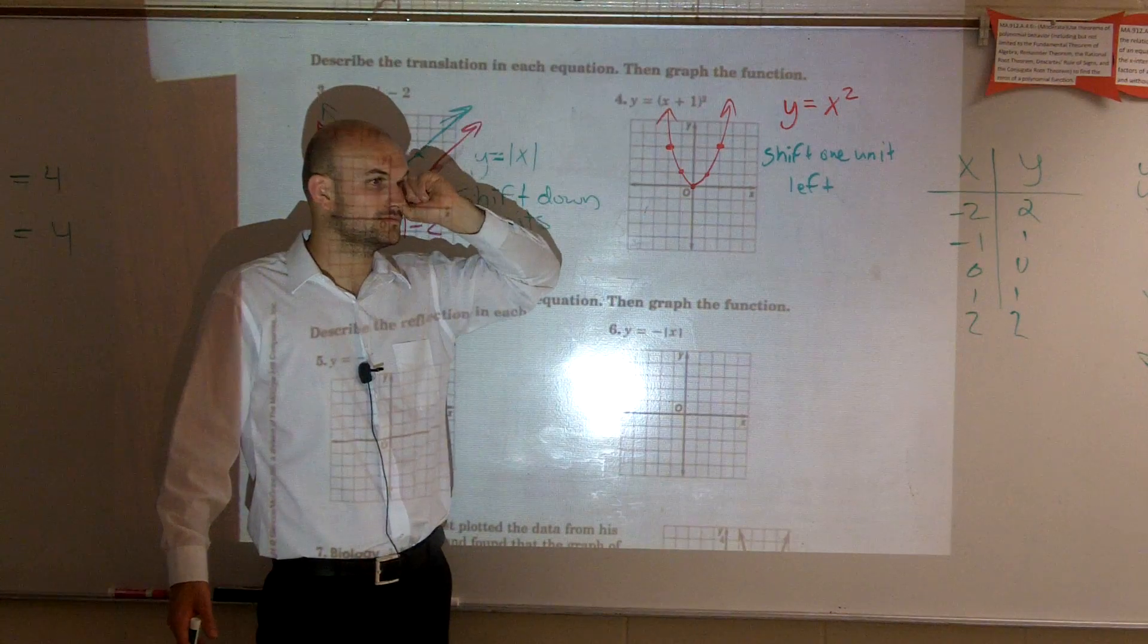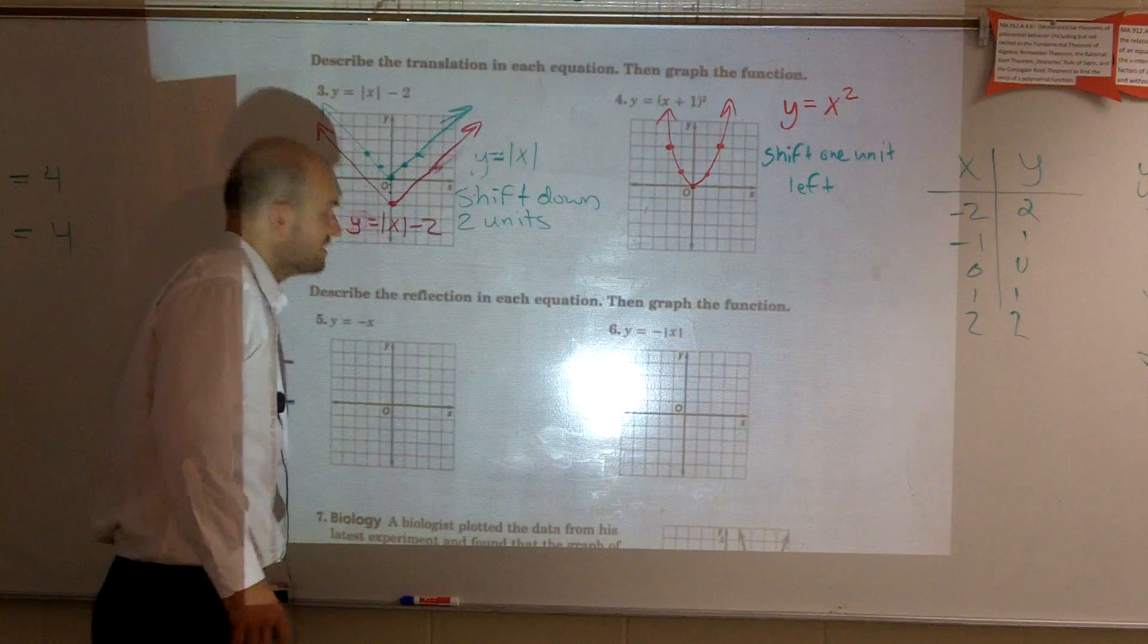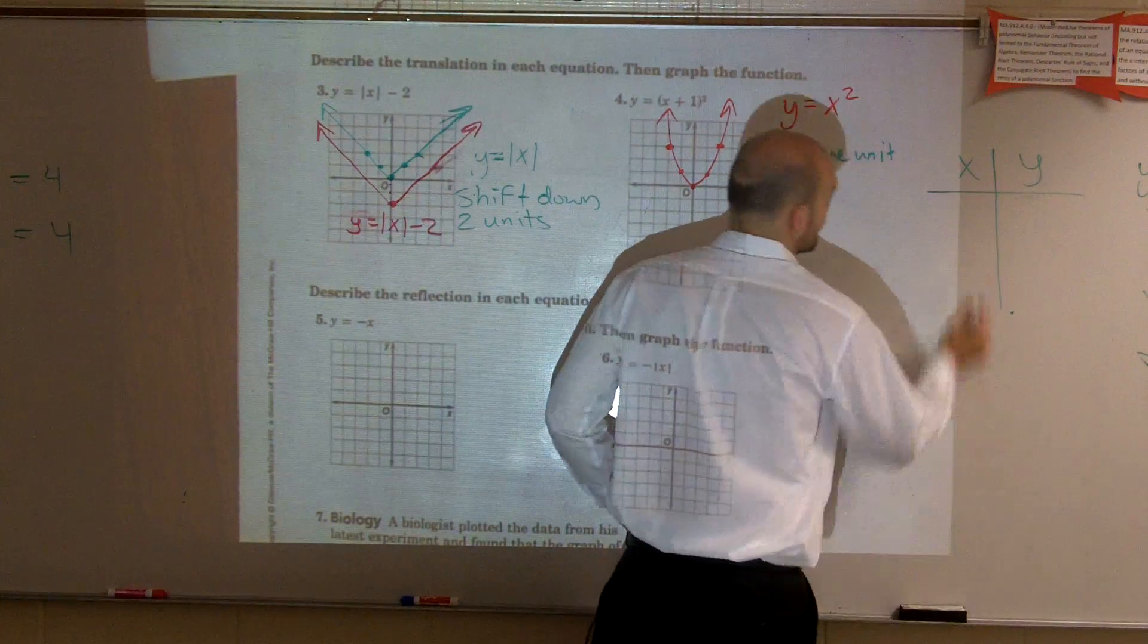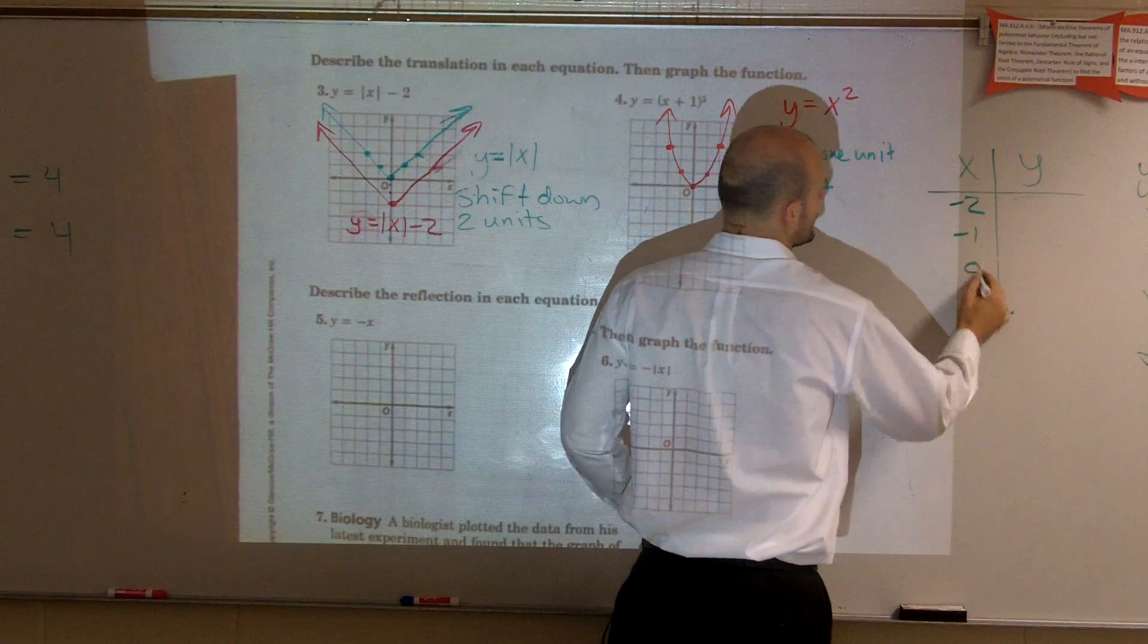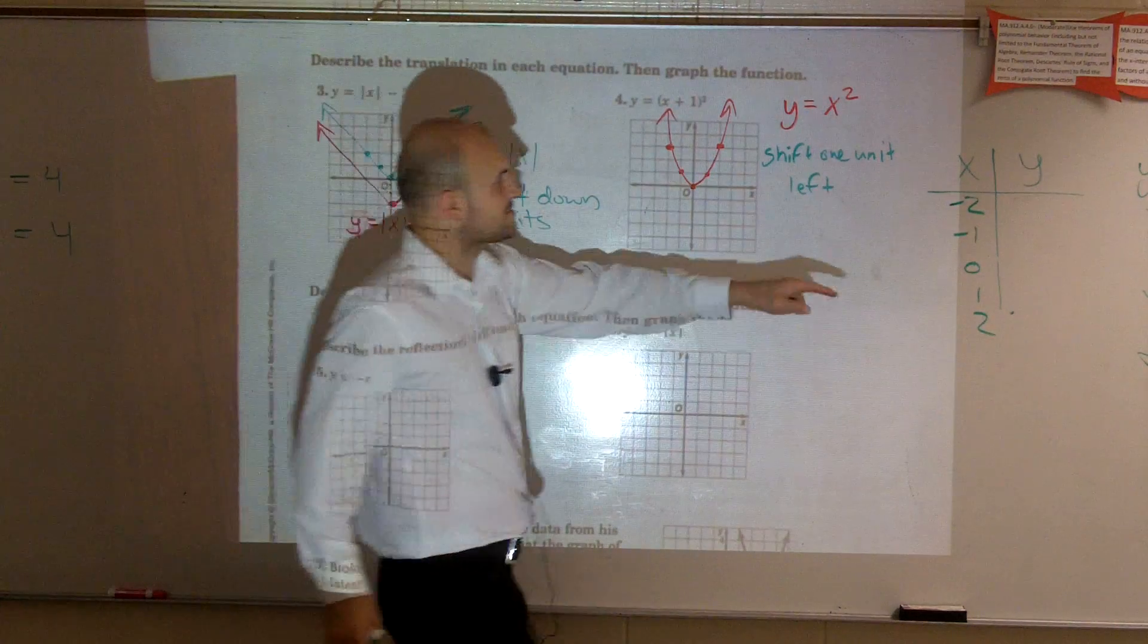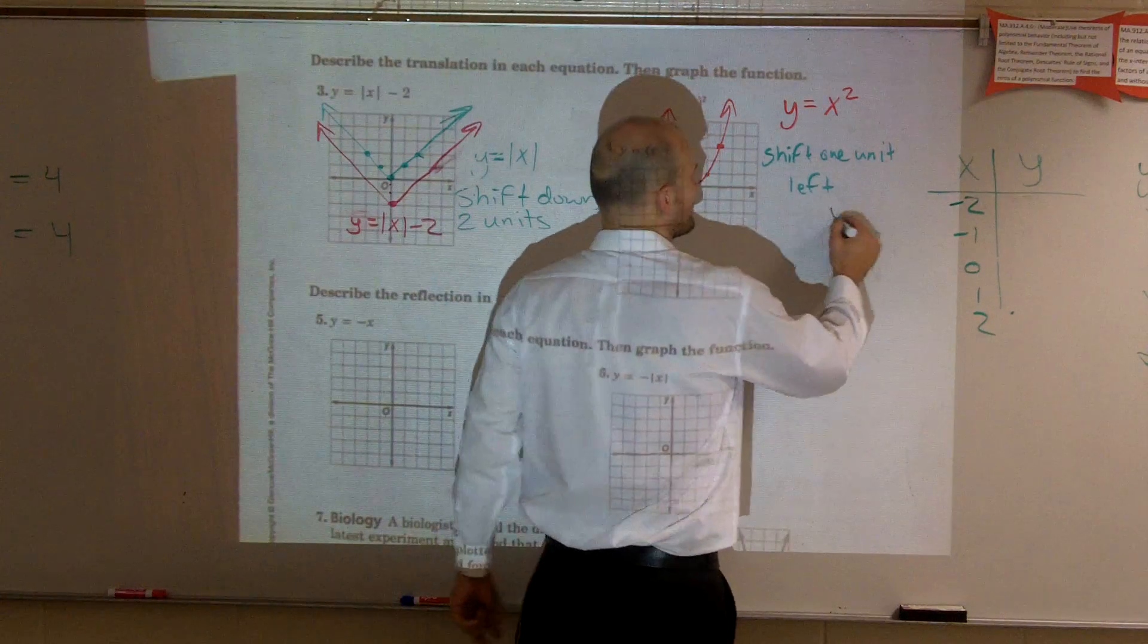But how did you get the points? Oh, how did I get the points? Very good. OK. I did a table of values. Negative 2, negative 1, 0, 1, and 2. Remember, guys, if you don't know what a graph looks like, make a table of values. Then you just plug it in for each one.